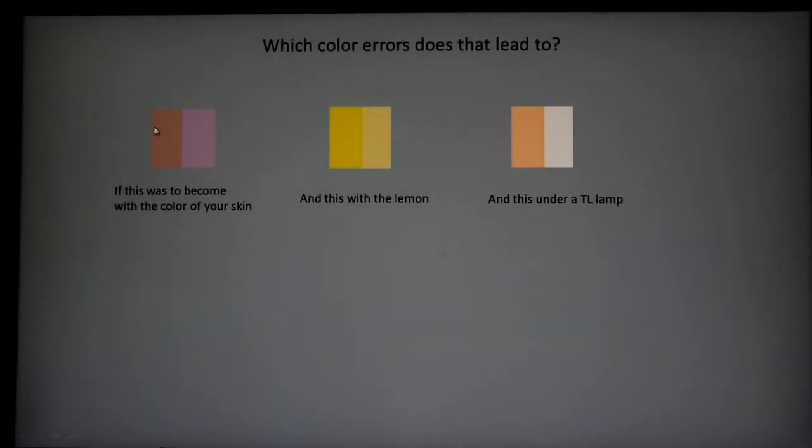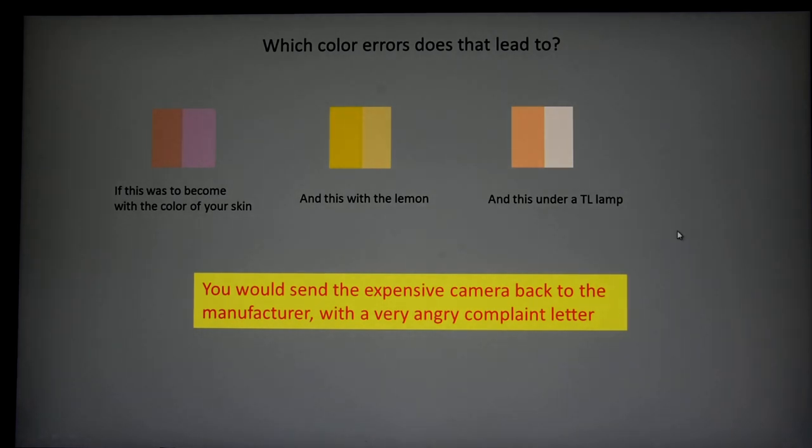What does that mean? That means a face color which should look like this would come to look like this, for example—rather pinkish and even a little bit bluish purplish pink. A nice lemon will become a post-it, and under very difficult illumination, like TL lamps or Mercury lamps, street lights, you will even get totally weird colors. So if that happens, you would throw the camera away or bring it back to those who sold it to you. So that's not good.